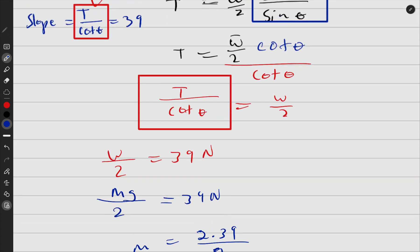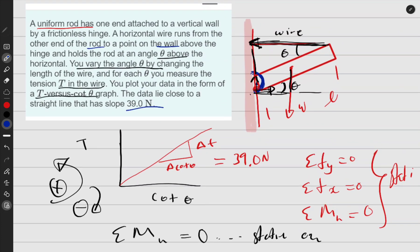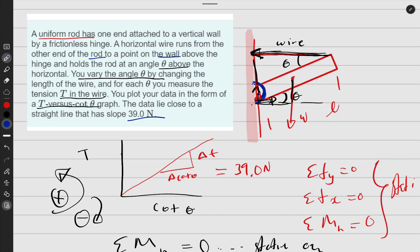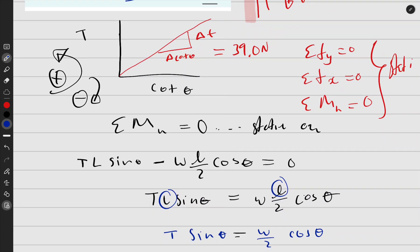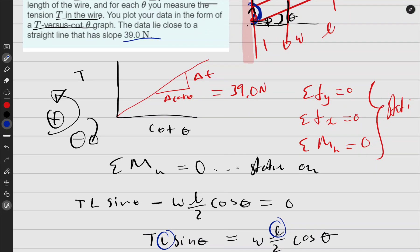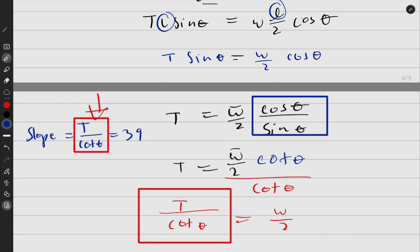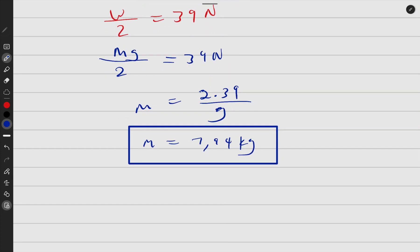So in these questions, it always sounds impossible looking at what data they give you, but normally just throw in and then do the moment. If the moment is not enough, you do sum of forces along the wire. If that is not enough, you move to this. Because it's static, you need to use this, and you're going to land to the very correct answer like this one of mine.